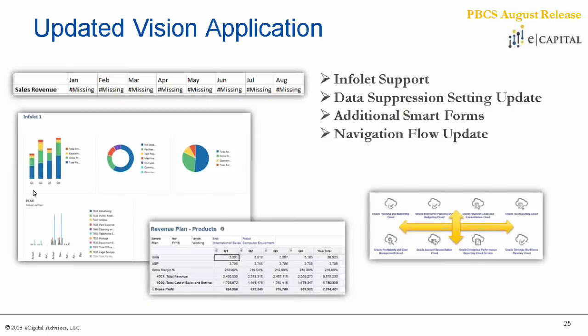Another update hitting the vision app is the navigation flows update, giving you more ability to set up connections for your users to access PBCS and other Oracle cloud offerings via one interface and navigate based on clusters. There is also a redesign of some of the clustering within the simplified interface, which you might notice if you're spending time in the vision application doing testing. So just some more functionality available within the sample app to get you up to speed with PBCS or to do heavy testing, whatever you use the app for. And that is what comes with August.